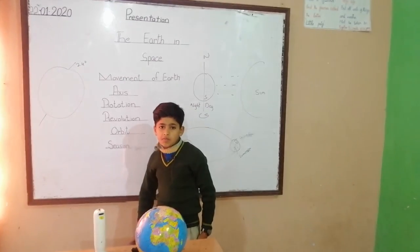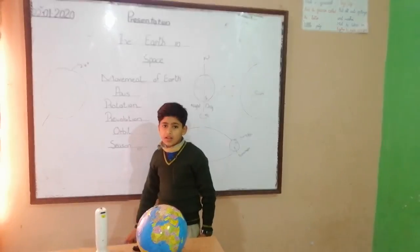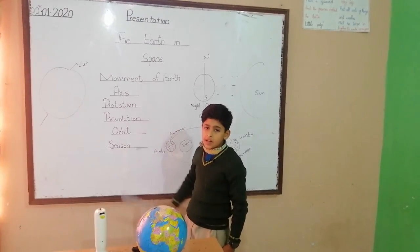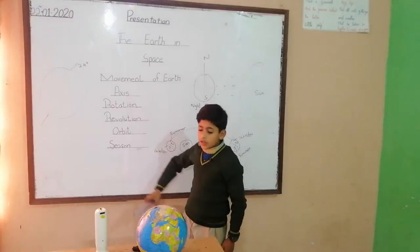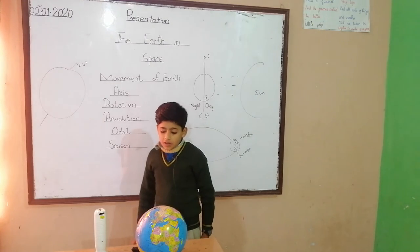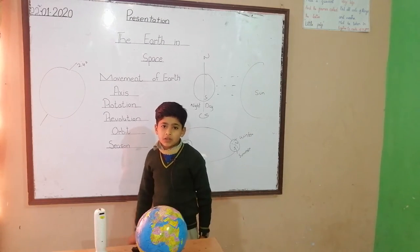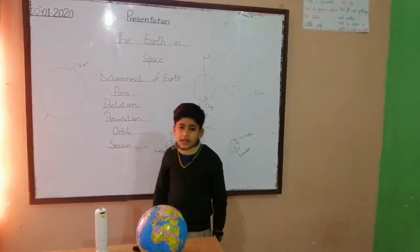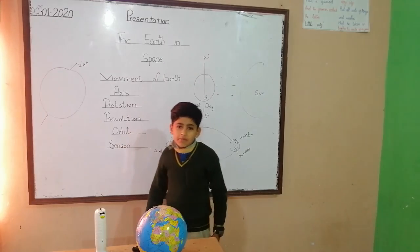Earth completes one revolution around the Sun in 365 days, which is equal to one year. A leap year occurs every four years, and in a leap year one extra day is added, making it 366 days.